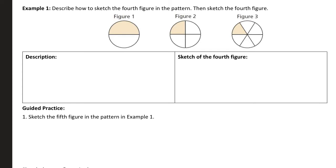So each of these, one section is shaded in, but in the first figure there are two sections. In the second figure, there are one, two, three, four sections. In the third figure, there are one, two, three, four, five, six sections.